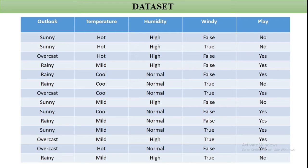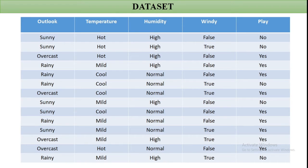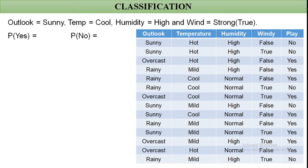Consider a dataset related to weather conditions. Weather is described by four features, and based on those we decide whether to play an outdoor game or not. 'No' means the weather condition is not suitable to play a game, and 'Yes' means the conditions are suitable. For example, if outlook is sunny, temperature is hot, humidity is high, and wind is false, then this condition is not suitable to play.